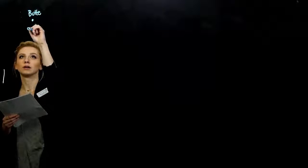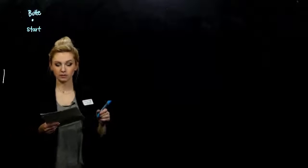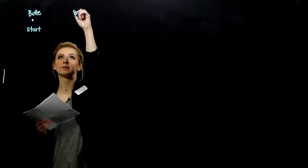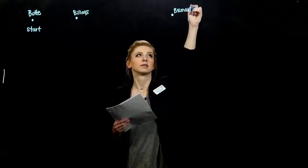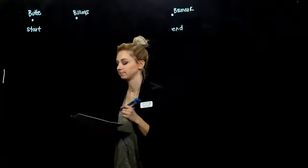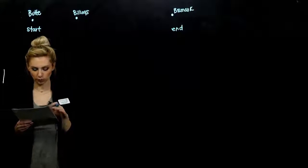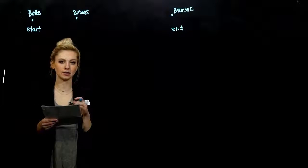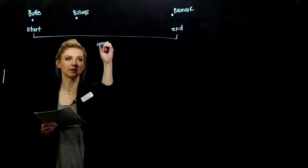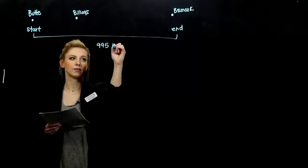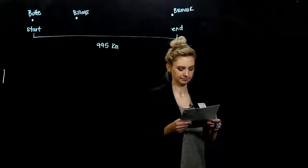Where do these start? Professor started at Butte. So this was his start. In the middle somewhere, he stopped at Billings before he made it all the way to Bismarck. And this was the end. In total, we know that he biked 995 kilometers. So from the start to the finish, I know that that distance was 995 kilometers.